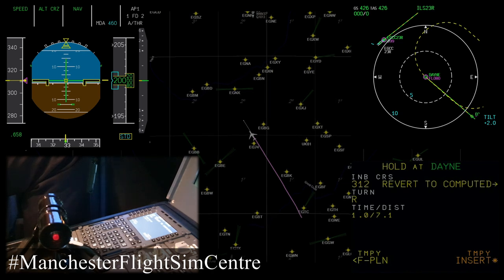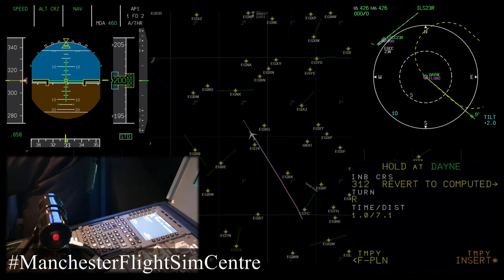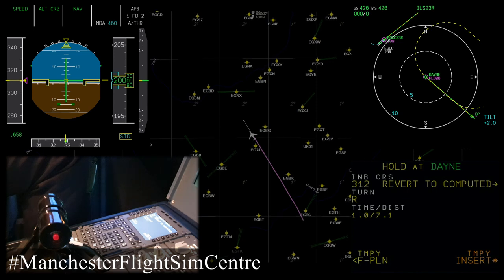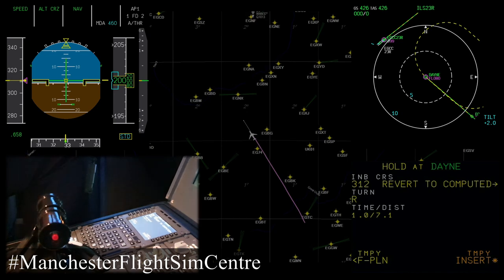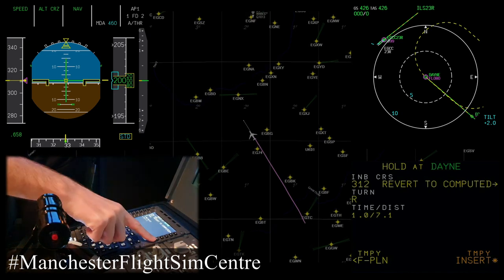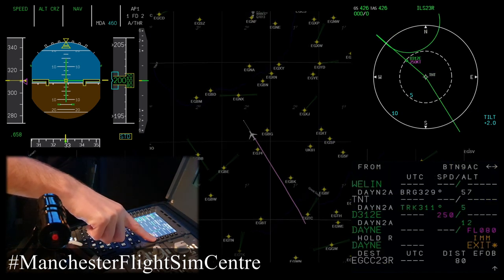If it was a longer hold, I could overwrite that. Or if the hold was based on a particular distance, then I could insert a distance instead. Should I change my mind and wish to revert to the computed hold, there's an option for that also. But I'm happy with the hold that I've inserted: 312 degrees, right turn at Dane for one minute is correct. I would agree that with the pilot monitoring, and once we're both in agreement — insert.